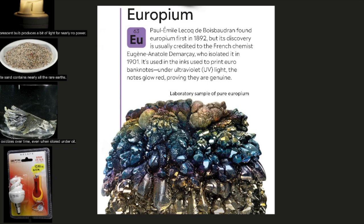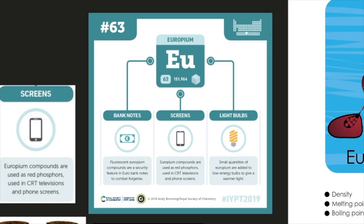Paul et Mille Lecoq de Bois-Bedran found Europium first in 1892, but its discovery is usually credited to the French chemist Eugène Anatole de Marquet, who isolated it in 1901. It's used in the inks used to print euro banknotes under ultraviolet UV light. The notes glow red, proving they are genuine. Here we have a laboratory sample of pure europium.